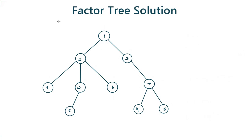We will now see how to use Mo's algorithm on trees. We know how to apply Mo's algorithm on an array, but how do we do it on trees? We will use the Euler path of a tree to convert the tree into an array, and then apply Mo's algorithm on that array.